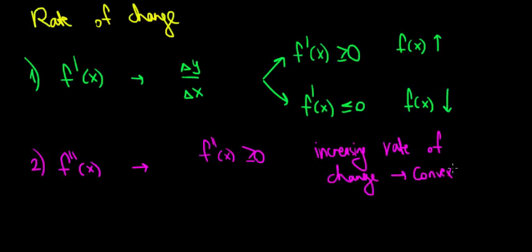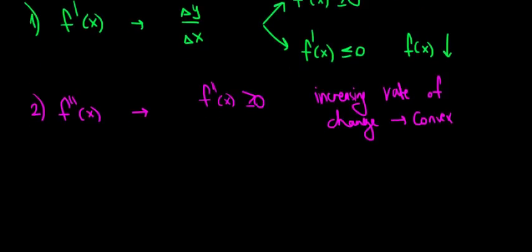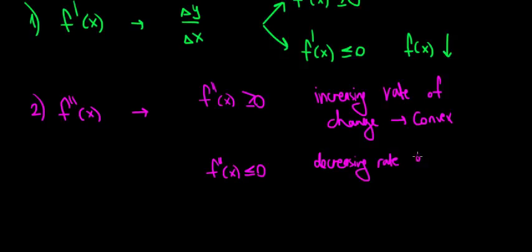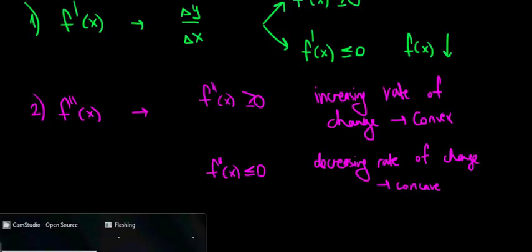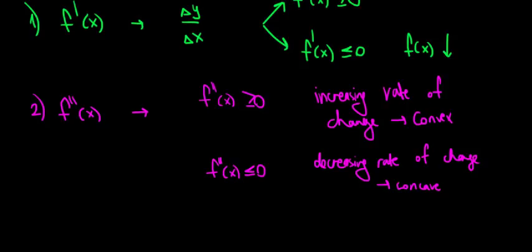But if the second order derivative is negative, then we have a decreasing rate of change, and we have a concave shape. That's it for this video — in the next video we'll show it on a graph.